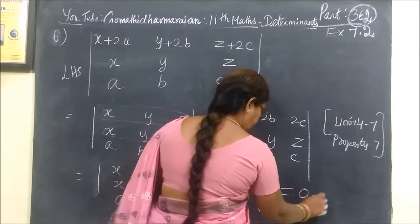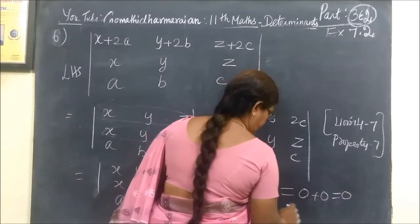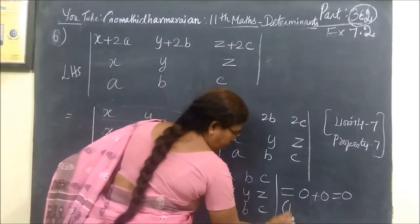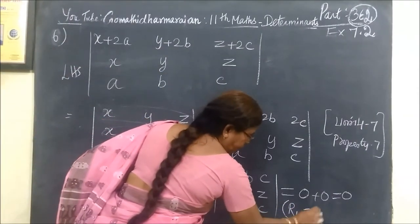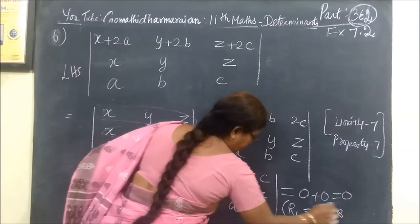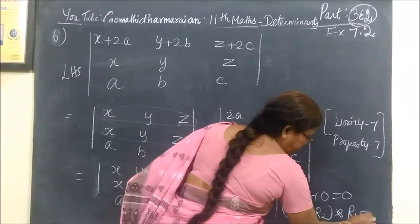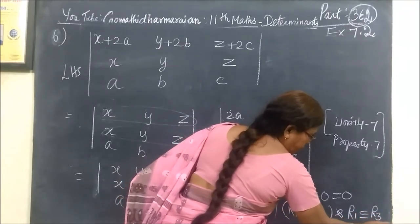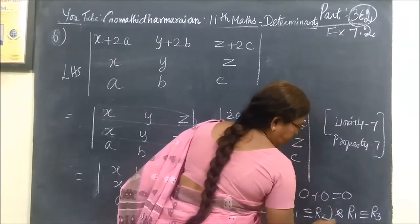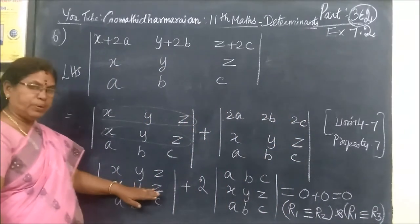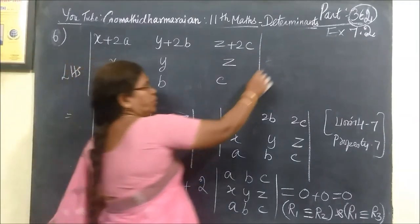So this is equal to 0 because this is equal to 0. Because C1, sorry R1, R1, R2, 2 is equal to 0. And this is equal to 0, R1 is equal to R3. So this is the same, this is equal to 0, and the determinant value is 0.